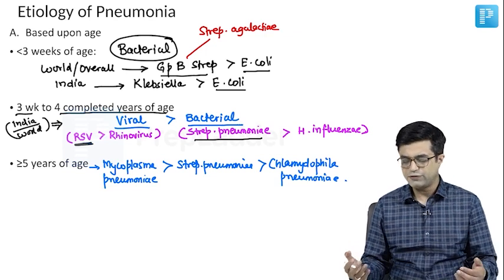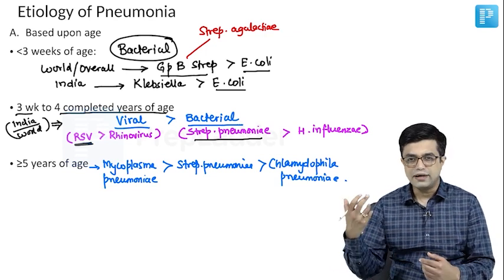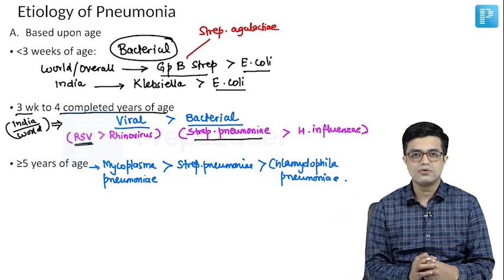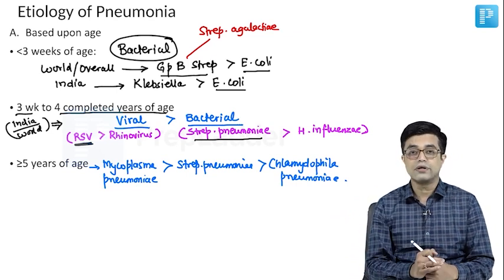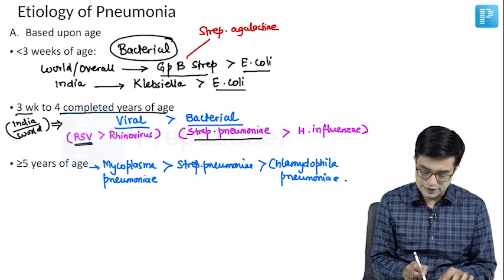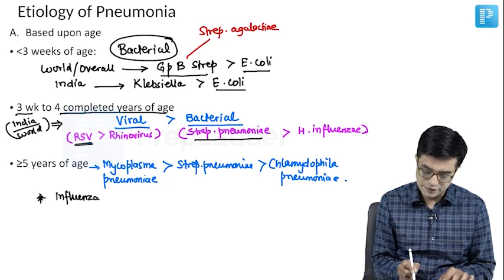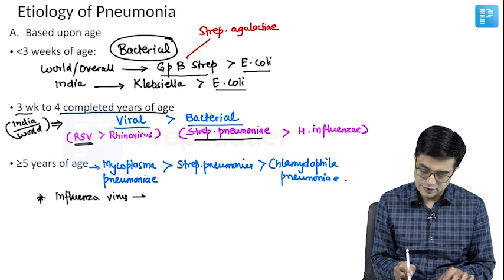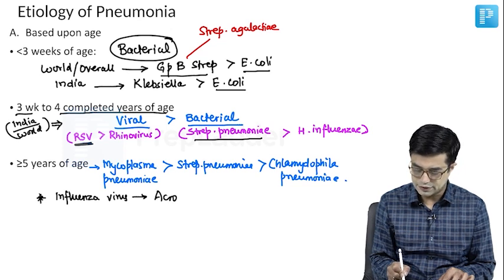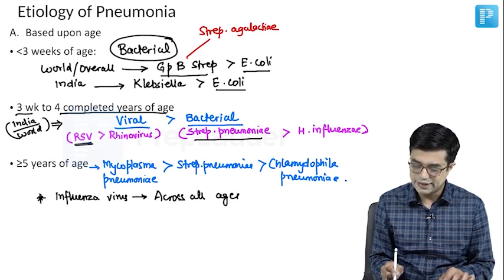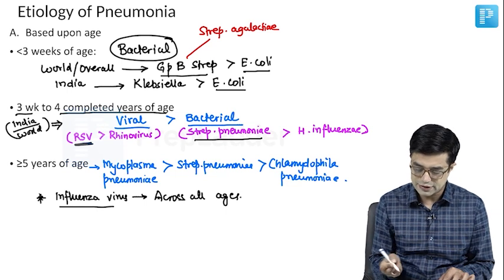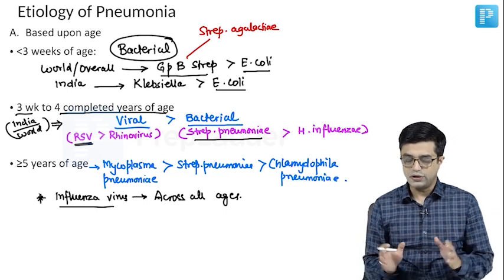In addition, you may find non-typeable Haemophilus influenzae and influenza virus occurring in this group. Put a star and remember that influenza virus can cause pneumonia across all ages, but it is not the most common cause in any specific age group.